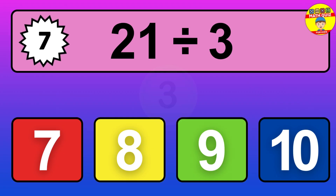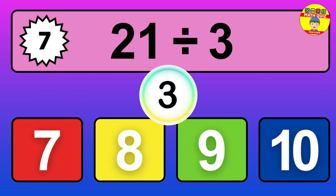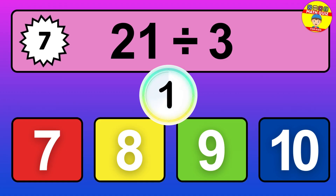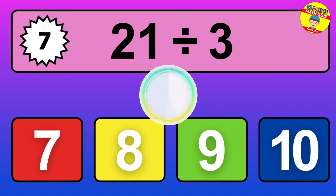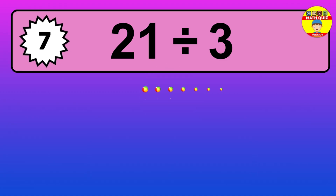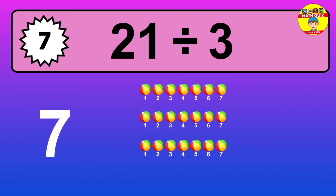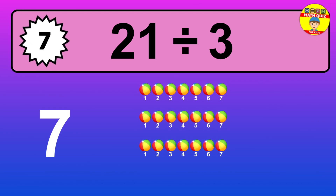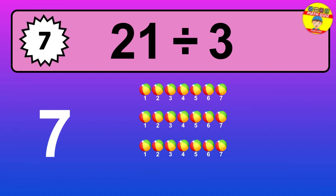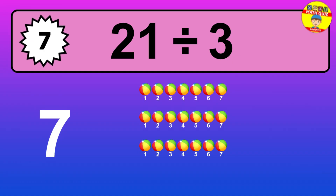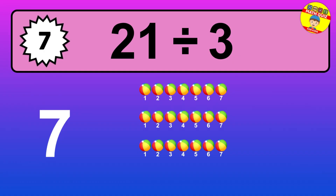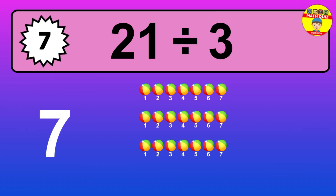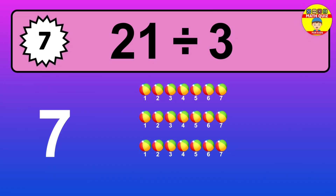What is 21 divided by 3? Picture this. You have 21 objects to divide into groups of 3. How many groups can you make? Let's think about it. Ready to find out? Let's break it down. Let's imagine you have 21 objects — can you picture them lined up?